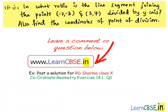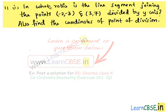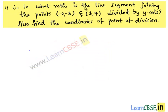Chapter 14, Exercise 14.3, 11th Question, 1st bit. In what ratio is the line segment joining the points divided by the y-axis? Also find the coordinates of the point of division. Let's move on to the solution.